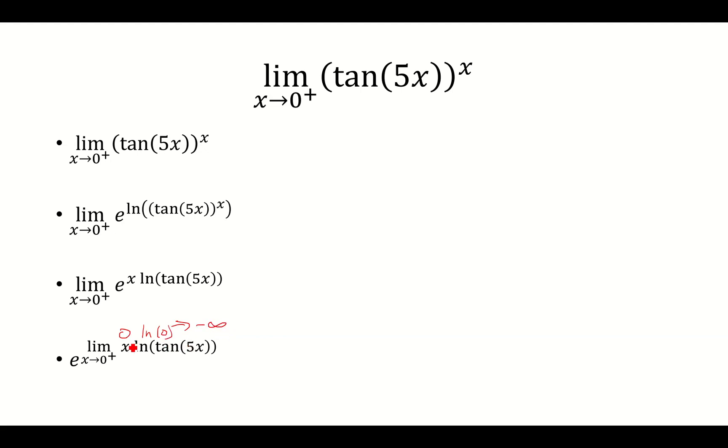So I'm going to rewrite x in terms of 1 over 1 over x. Now, here I get 0 over 0, or sorry, negative infinity over infinity.